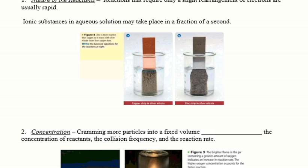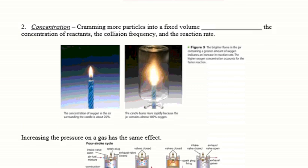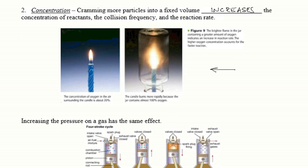The second factor is concentration. If we cram more particles into a fixed volume, we increase the concentration of the reactants. If you increase the concentration of the reactants, you're going to increase collisions and increase the reaction rate. Here we see a candle, and in the right hand picture the candle is put in a jar of pure oxygen, and we see that the candle burns brighter because there's more oxygen molecules that can react.